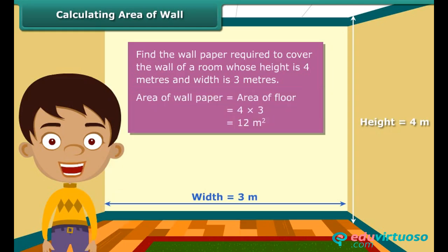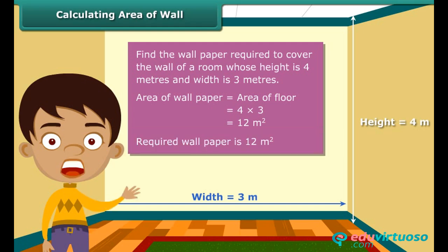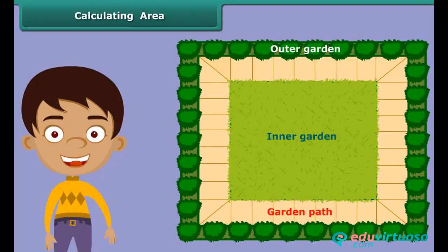The area of the wall is 4 meters multiplied by 3 meters, which is 12 square meters. So 12 square meters of wallpaper will be required to cover the wall of Nidhi's room. Now let us advance a little further.